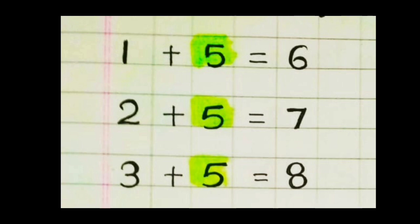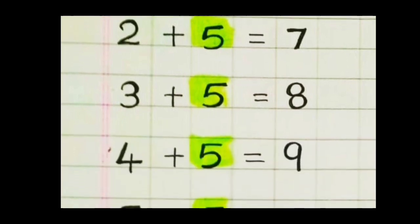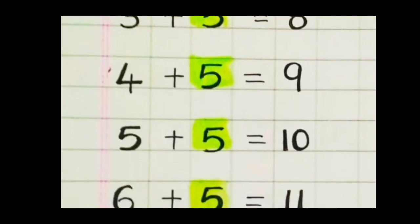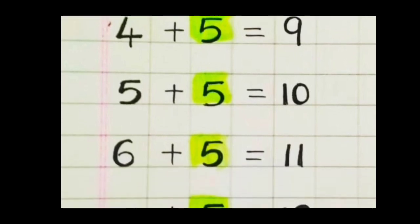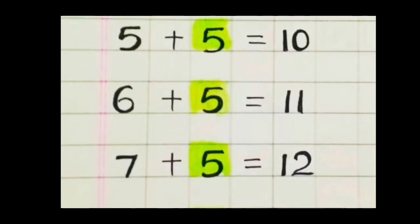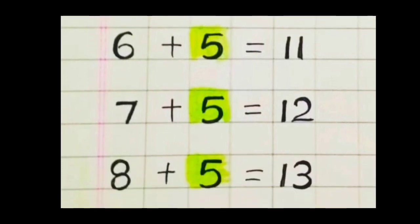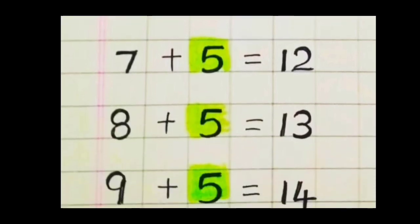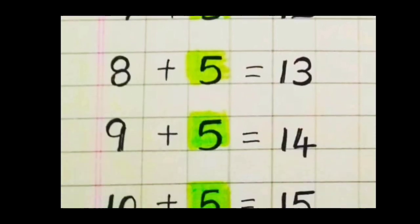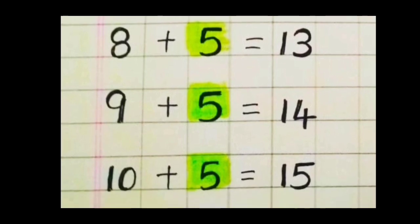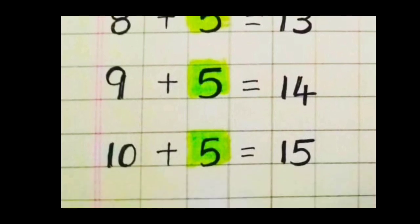Step two — we can say a little more faster. One plus five is six. Two plus five is seven. Three plus five is eight. Four plus five is nine. Five plus five is ten. Six plus five is eleven. Seven plus five is twelve. Eight plus five is thirteen. Nine plus five is fourteen. Ten plus five is fifteen.